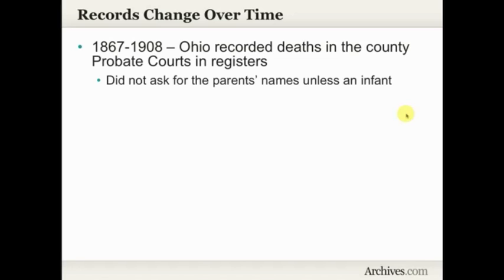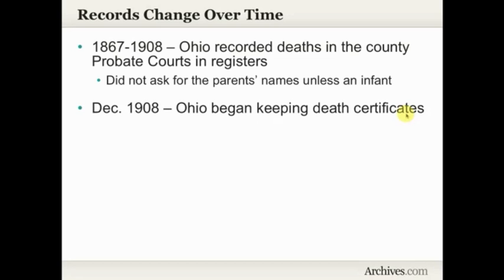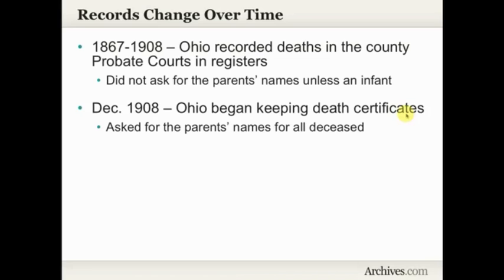That changed in December 1908 when Ohio started keeping what we think of as modern death certificates. These death certificates asked for the parents' names for all deceased, no matter their age — whether they were an infant or 102 years old, there was a place where the parents' names were supposed to be recorded. So that's going to make a difference on what we find as we're going through our family history research, because in different years you're going to have different types of records.